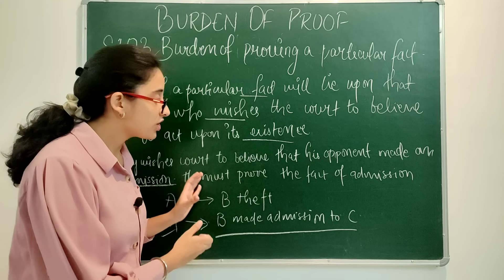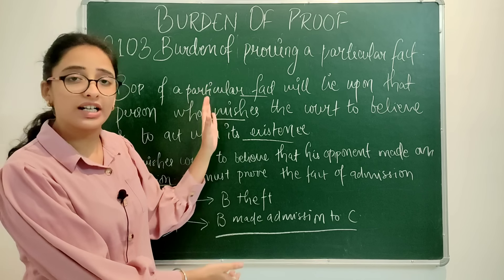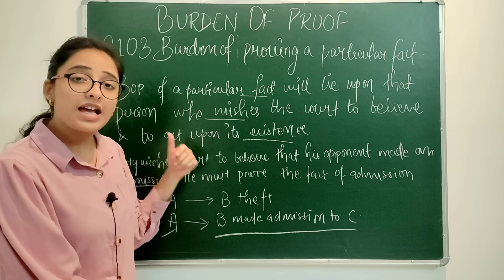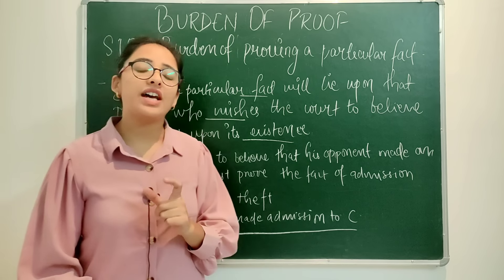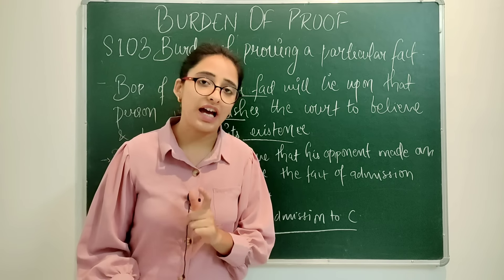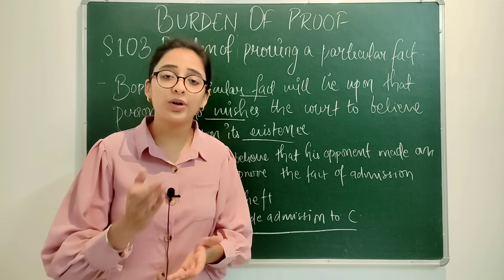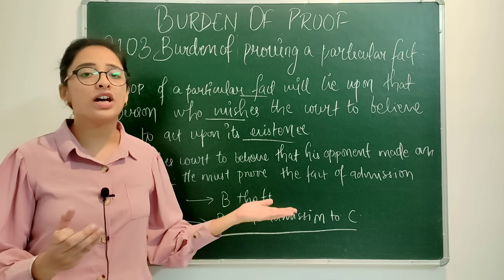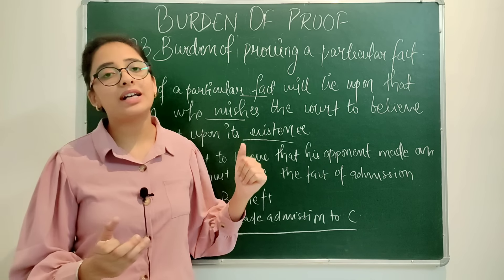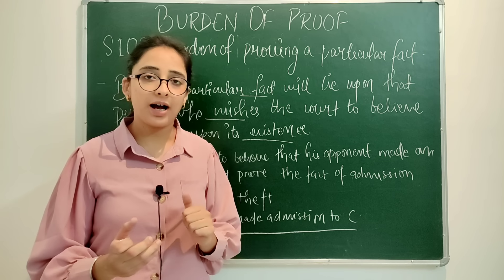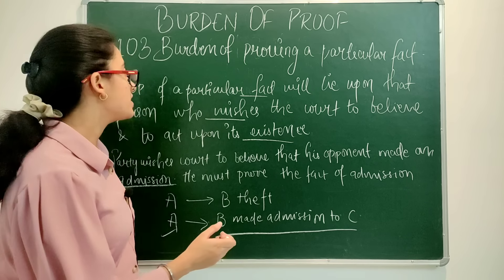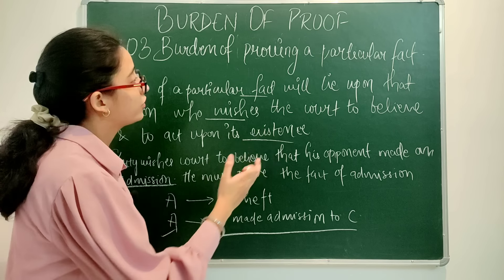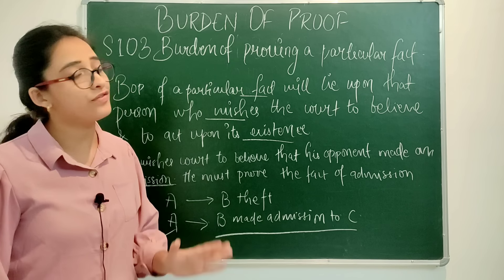Since A wants the court to believe a particular fact, A must prove the existence of that fact. So the burden will be upon A to prove that at that time he was in Kolkata. This is all about burden of proving a particular fact.